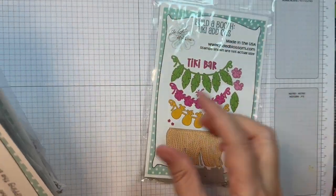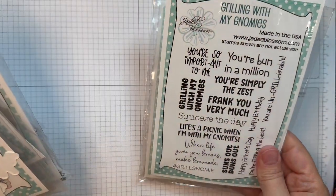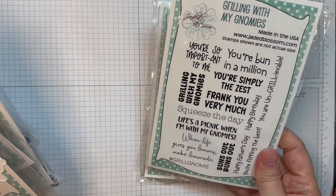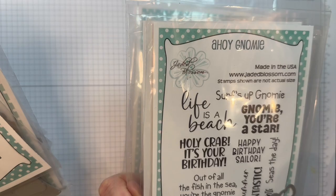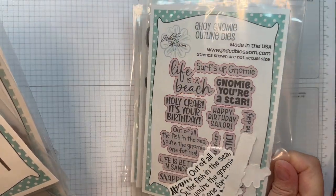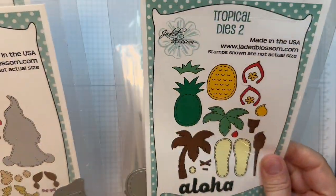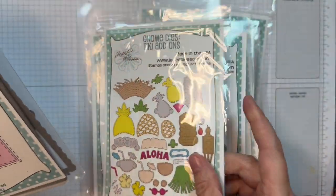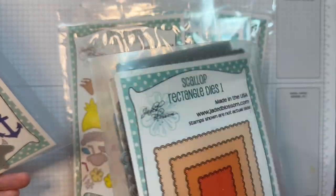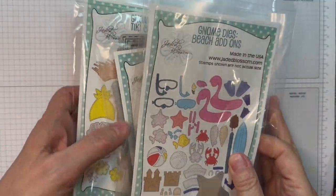I'm using Jada Blossom's Build-a-Booth Tiki Add-ons, their Grilling with My Gnomies stamp set and outline dies, their Ahoy Gnomies stamp set and outline dies, their Tropical Dies 2, Girl Gnome Dies, Gnome Dies Tiki Add-ons, Rectangle Dies and Scalloped Rectangle Dies, and our Gnome Dies Beach Add-ons.